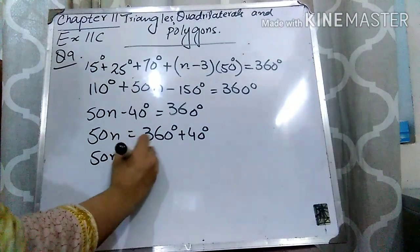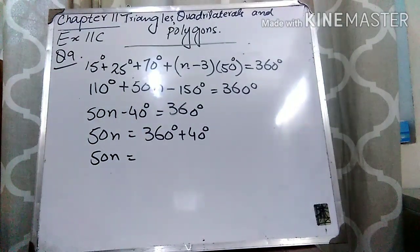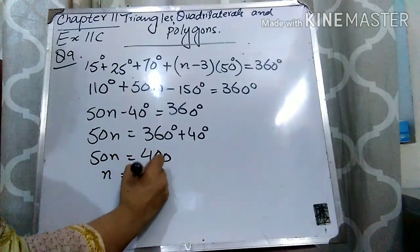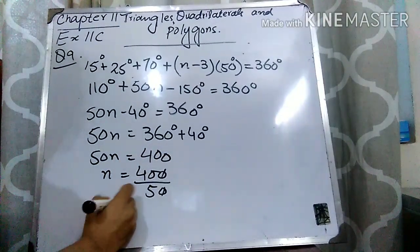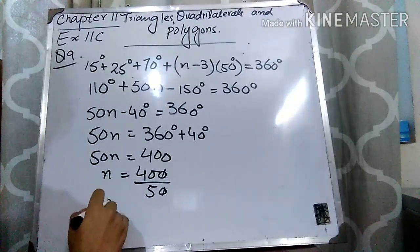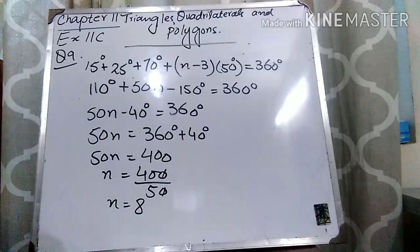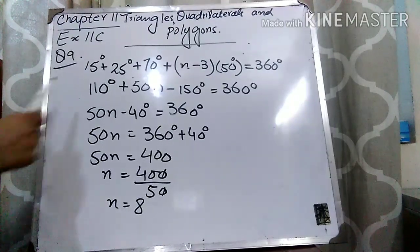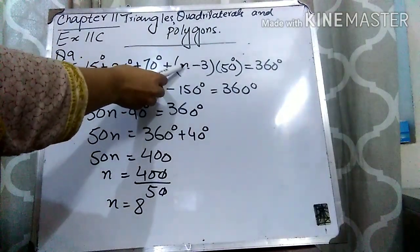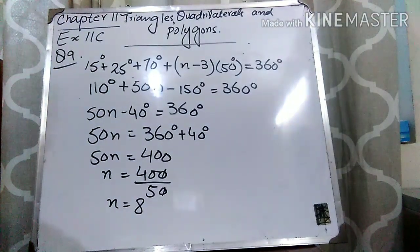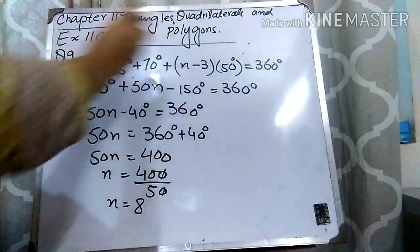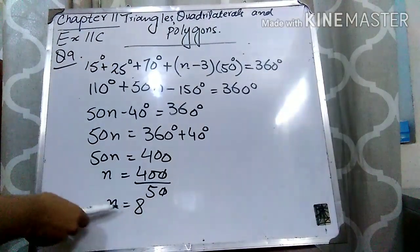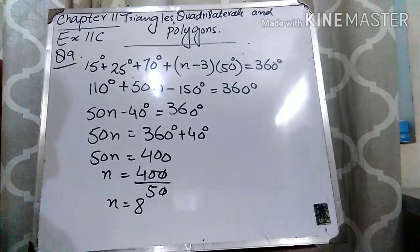Dividing both sides by 50: n = 400 ÷ 50 = 8. So the polygon has 8 sides. To revise: three exterior angles are given, the total angles are n, so remaining angles are (n − 3), each 50°. We use the sum of exterior angles equal to 360° and solve to find n = 8.